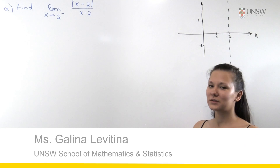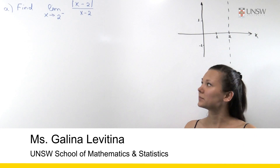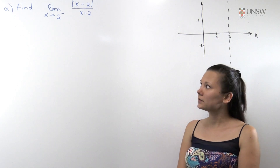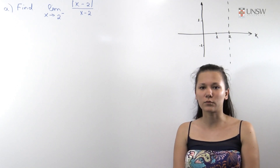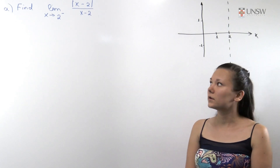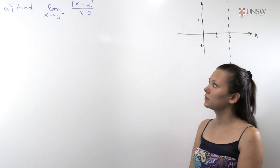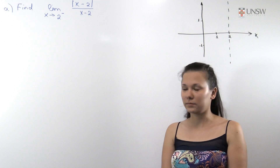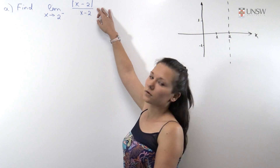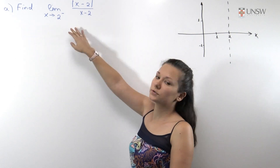Hello! In this video we will be looking at the two-sided limits of a function and how to find them via the one-sided limits at some point. In the first part of this question we will be looking at the left-hand limit of the function: the absolute value of x-2 divided by x-2, at the point 2.